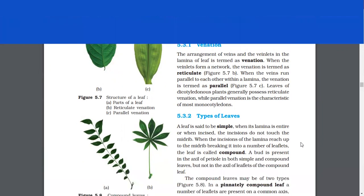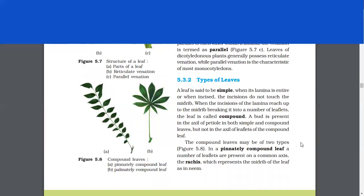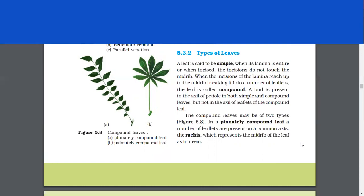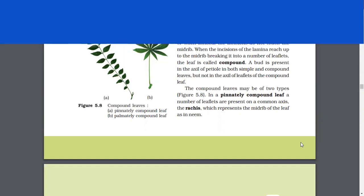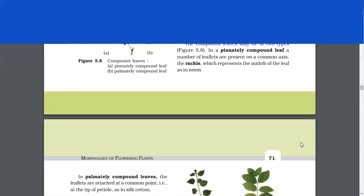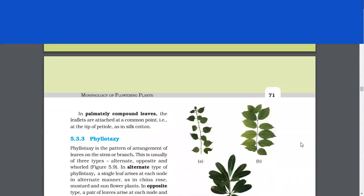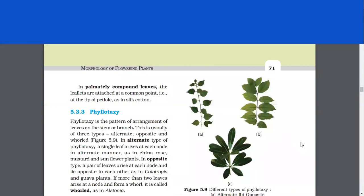Types of leaves. A leaf is said to be simple when its lamina is entire or when incised, incisions do not touch the midrib. When the incisions of the lamina reach up to the midrib, breaking it into a number of leaflets, the leaf is called compound. A bud is present in the axil of petiole in both simple and compound leaves, but not in the axil of leaflets of the compound leaf. The compound leaves may be of two types. In a pinnately compound leaf, a number of leaflets are present on a common axis, the rachis, which represents the midrib of the leaf. In palmately compound leaves, the leaflets are attached at a common point, that is at the tip of the petiole, as in silk cotton.